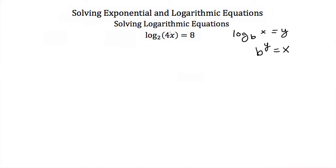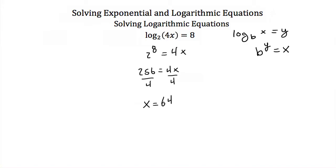So in this case we have 2 to the 8th power equal to 4x. This is pretty easy to solve — 2 to the 8th power is 256. That's equal to 4x, so dividing both sides by 4, we find that x is equal to 64. So if you ever have a logarithmic equation with a variable inside the log, just convert it to an exponential equation.